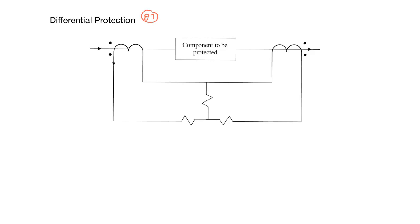Differential protection is basically looking at the current entering a device, I_in, and looking at the current coming out of the device, I_out. If the two currents are not equal, that means that there must be a fault in the protected component.